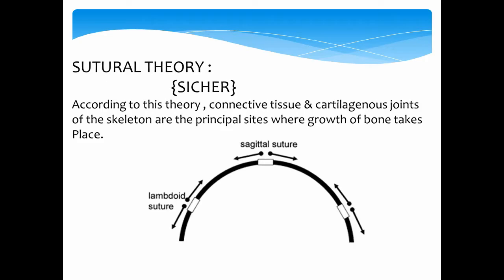Sutural theory was given by Sicher. According to him, craniofacial growth occurs at sutures. This theory explains that connective tissue and the cartilaginous joints of the skeleton are the principal sites for the primary growth of the bones.